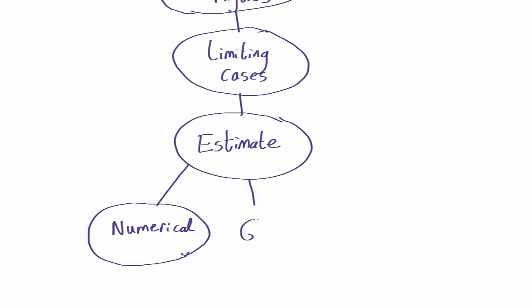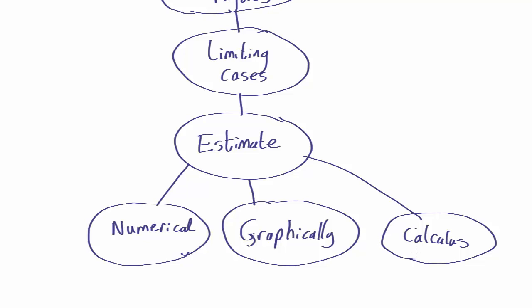Then you can do it graphically. Actually plot graphs of the various quantities and estimate things off the graphs. Surprisingly powerful technique and a useful check on the others. And then finally there's calculus. Very nice when it works because it can give you an actual analytic answer. It doesn't often work in practical situations. So these three approaches together will allow you to solve these problems where everything is changing.